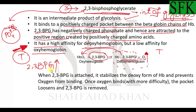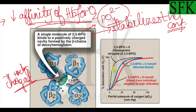If 2,3-BPG increases in concentration, it reduces the affinity of hemoglobin for oxygen, and therefore the oxygen dissociation curve shifts to the right. The blue curve represents a normal oxygen dissociation curve, while the red curve represents elevated levels of 2,3-BPG — seen in blood from individuals adapted to high altitudes.